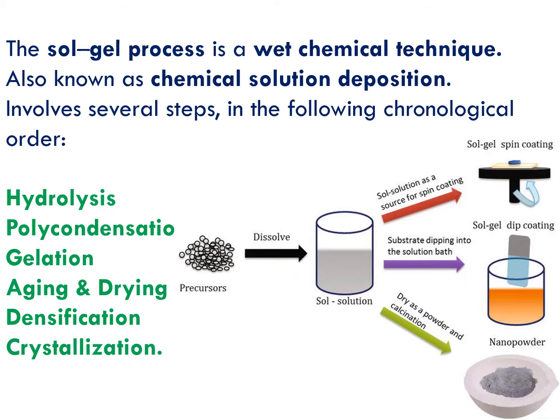The sol-gel method is an example of the bottom-up approach. The sol-gel process is also called a wet chemical technique, or chemical solution deposition. That means a chemical solution is prepared, and the solute particles present in the solution undergo a deposition process to finally yield a solid material with dimensions within the nanoscale region. This process is called the sol-gel approach.